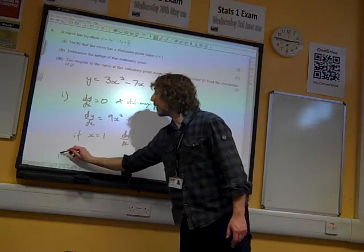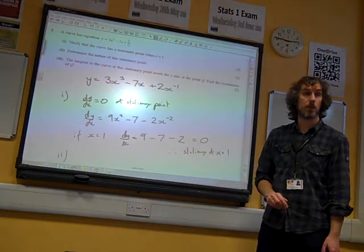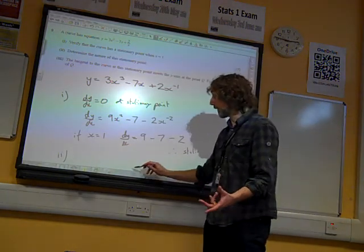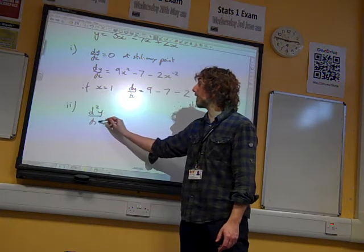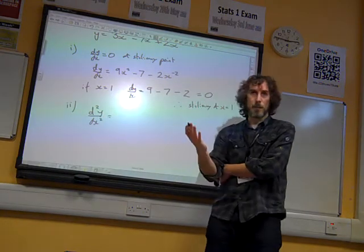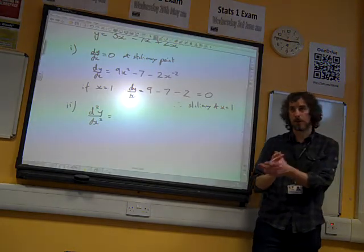Part 2, determine the nature of this stationary point. Again, it's going to be important that we clearly state what we've done at the end of this. So we're going to have to differentiate again, because we know that's how we find maximum and minimum points and determine them.